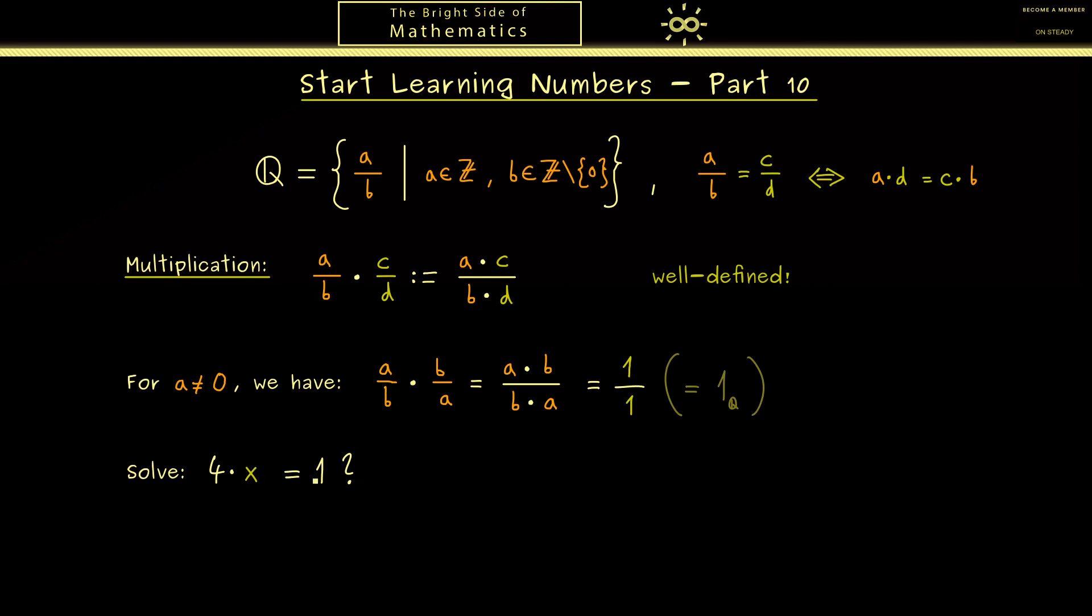Now you may remember the equation we had in the last video: 4 times x is equal to 1 was not solvable with integers. However, in the rational numbers Q we can rewrite this equation with fractions, and then of course we are able to solve it with x is equal to 1 quarter. So you see now we can solve even more equations.